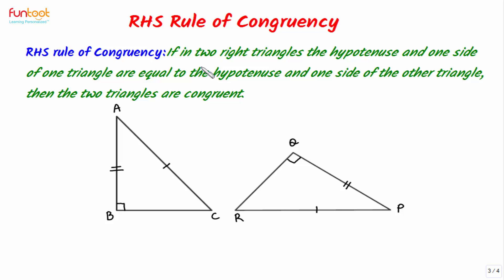The statement of RHS rule of congruency is: if in two right triangles the hypotenuse and one side of one triangle are equal to the hypotenuse and one side of the other triangle, then the two triangles are congruent.